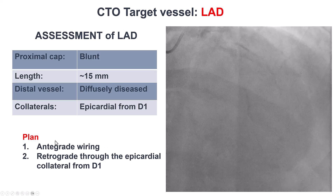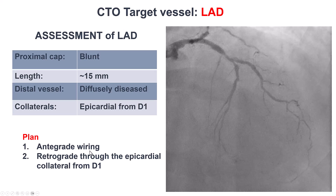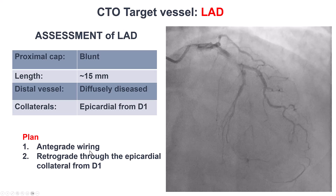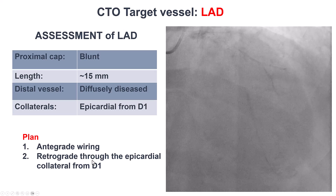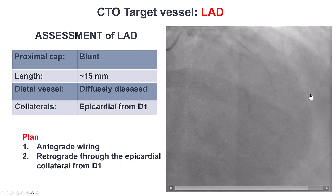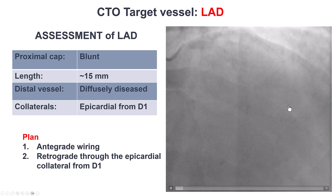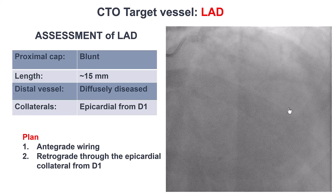Our plan was to try antegrade wiring first, and then if that failed, to try to go retrograde through the epicardial collateral from the diagonal.